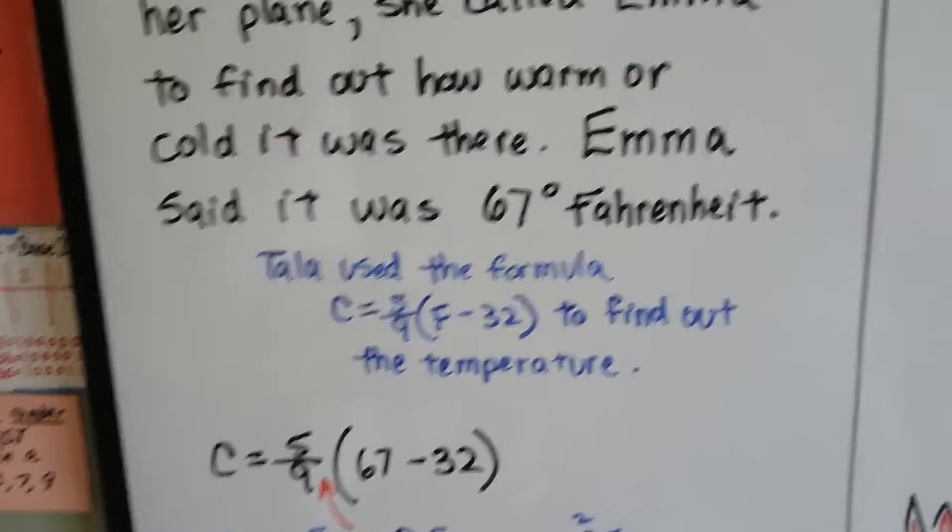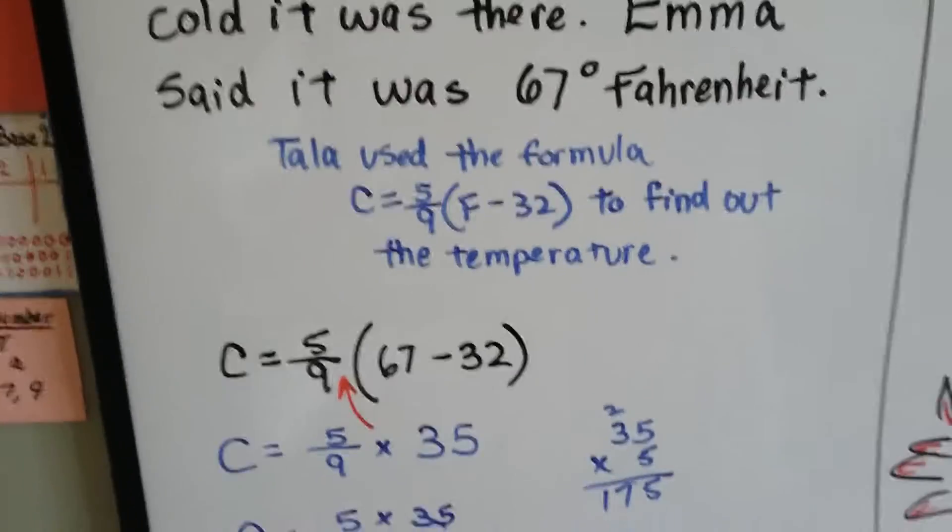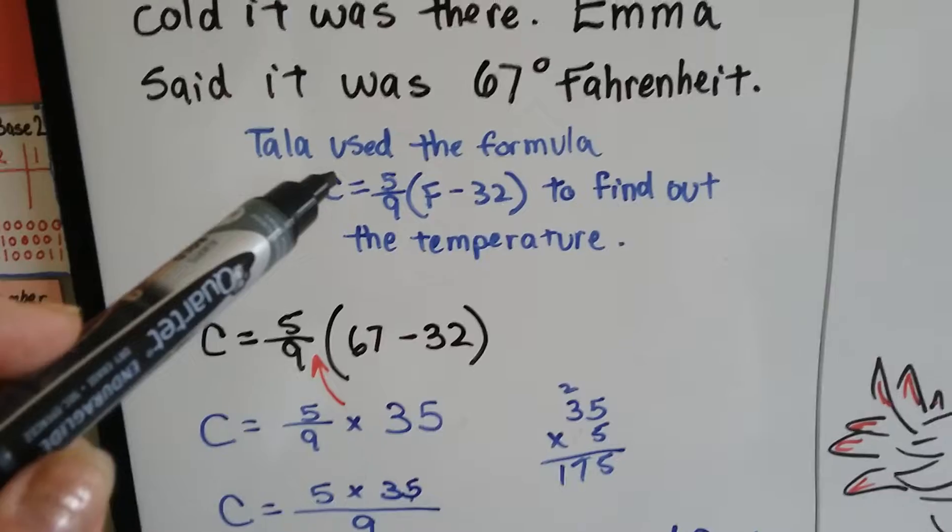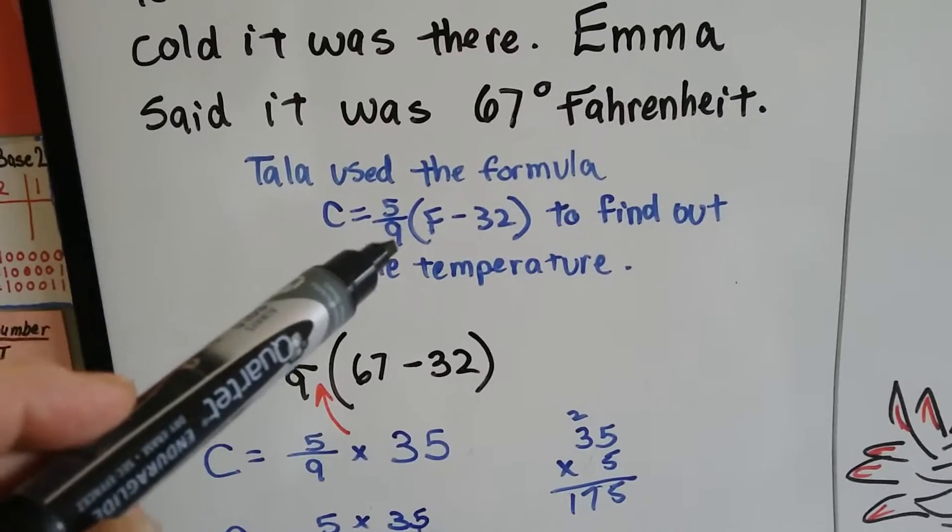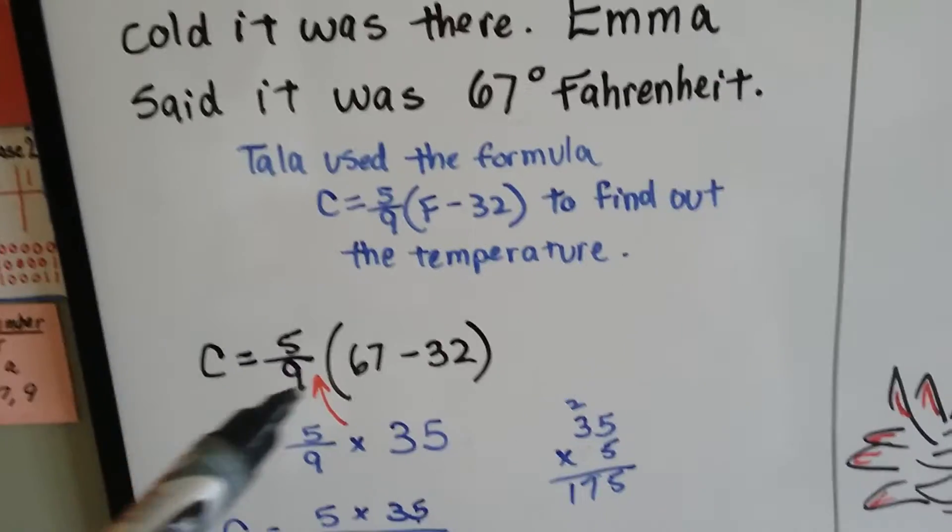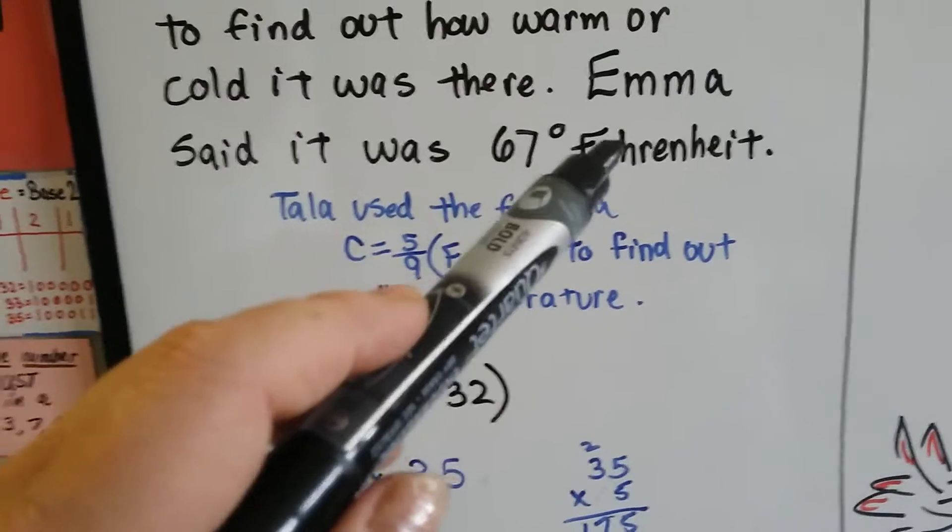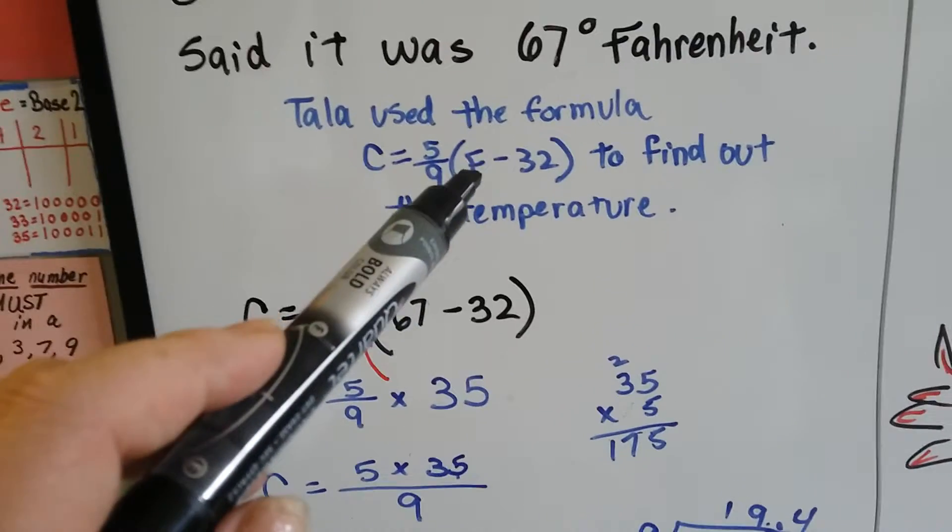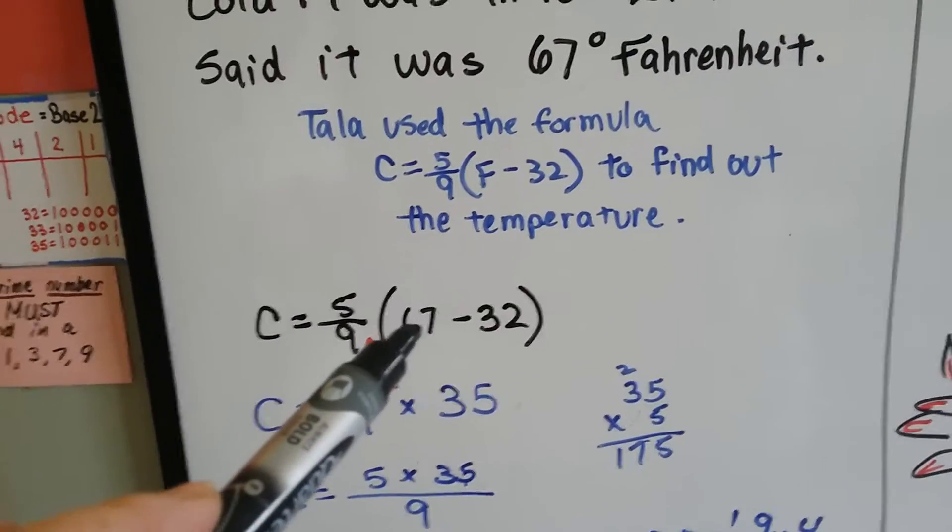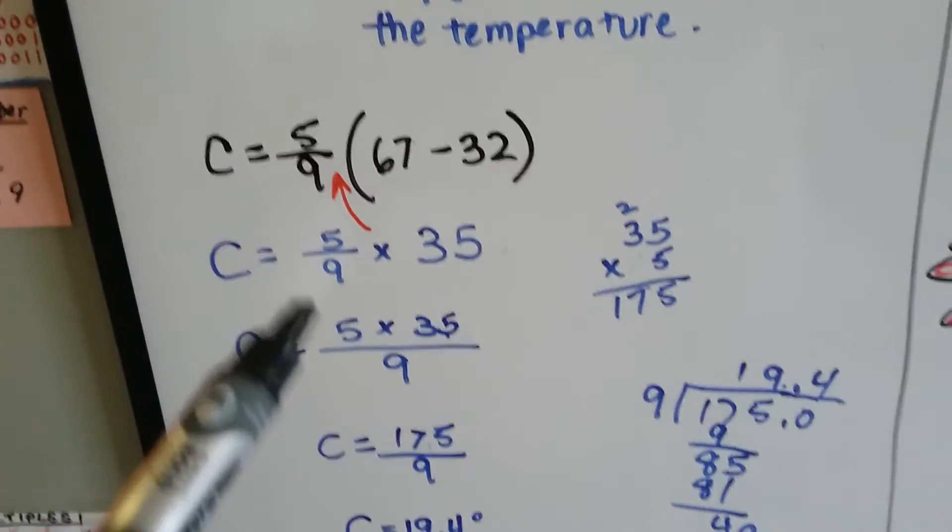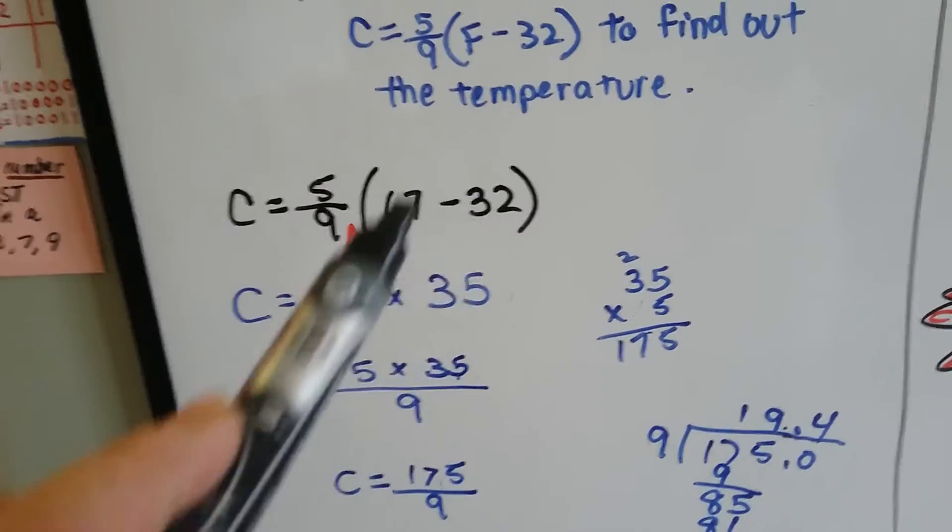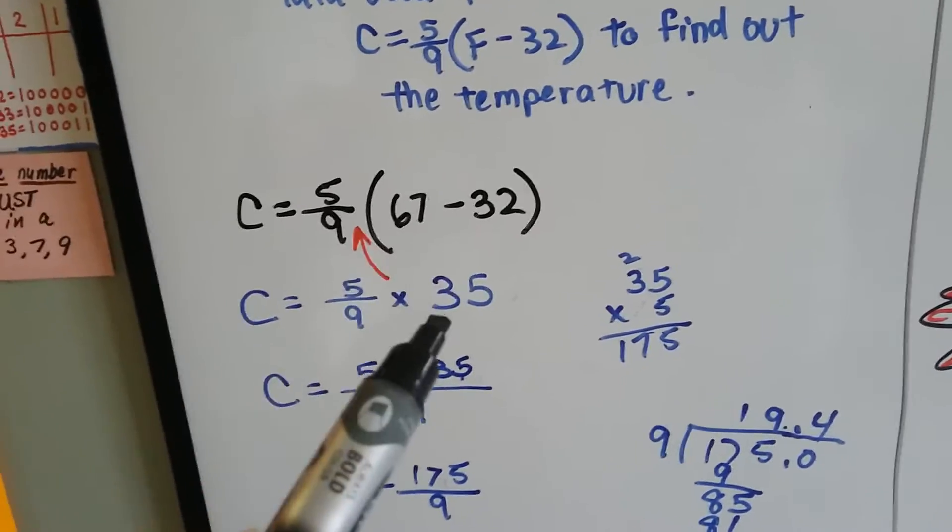So Tala used the formula to find out the temperature. She used Celsius is equal to 5 ninths times the Fahrenheit minus 32. So if it's 67 degrees Fahrenheit, where the F is for Fahrenheit, she put the 67 in. Now she has to do inside the parentheses first, 67 minus 32 is 35.